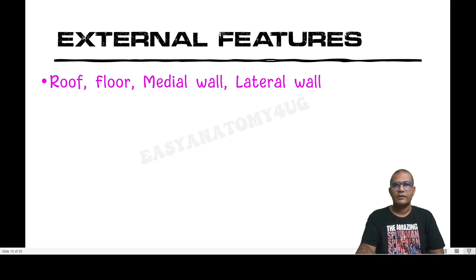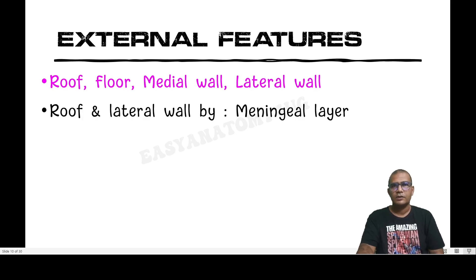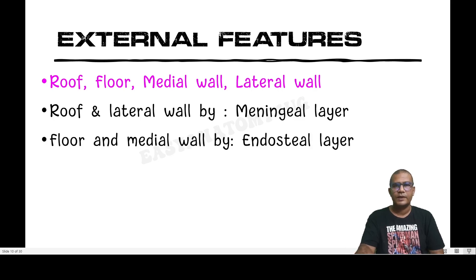External features: the cavernous sinus has a roof, floor, medial wall, and lateral wall. The roof and lateral wall are formed by the meningeal layer of dura mater, whereas the floor and medial wall are formed by the endosteal layer of dura mater.